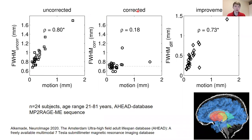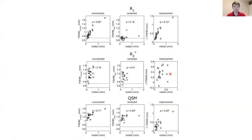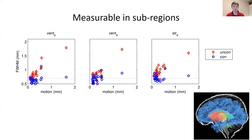When we correct for motion, this correlation is gone: the estimated FWHM for all subjects resides along the nominal resolution of the scan except for one small outlier, and the improvement significantly correlates with motion — the more subjects move, the higher the improvement in image quality and sharpness. This was visible in all three modalities: in QSM we saw this correlation, and in R2* we saw a significant improvement, applicable also in sub-regions like the ventricles and the striatum.